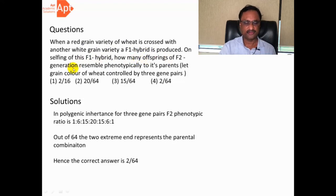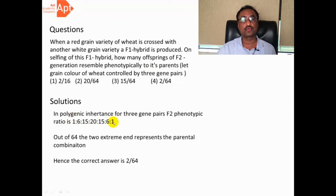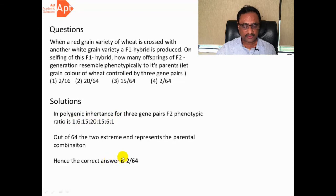Let us see a question which is usually asked. When a red grain variety of wheat is crossed with a white grain variety, an F1 hybrid is produced. On selfing, we have to calculate how many offspring of the F2 generation phenotypically resemble their parents. We know this polygene is controlled by three pairs of polygenes. Since it is controlled by three pairs, the F2 phenotypic ratio is 1:6:15:20:15:6:1. Out of these, the first 1 and the last 1 are parental types. So out of 64 total individuals, 1 plus 1 equals 2 resemble the parents.